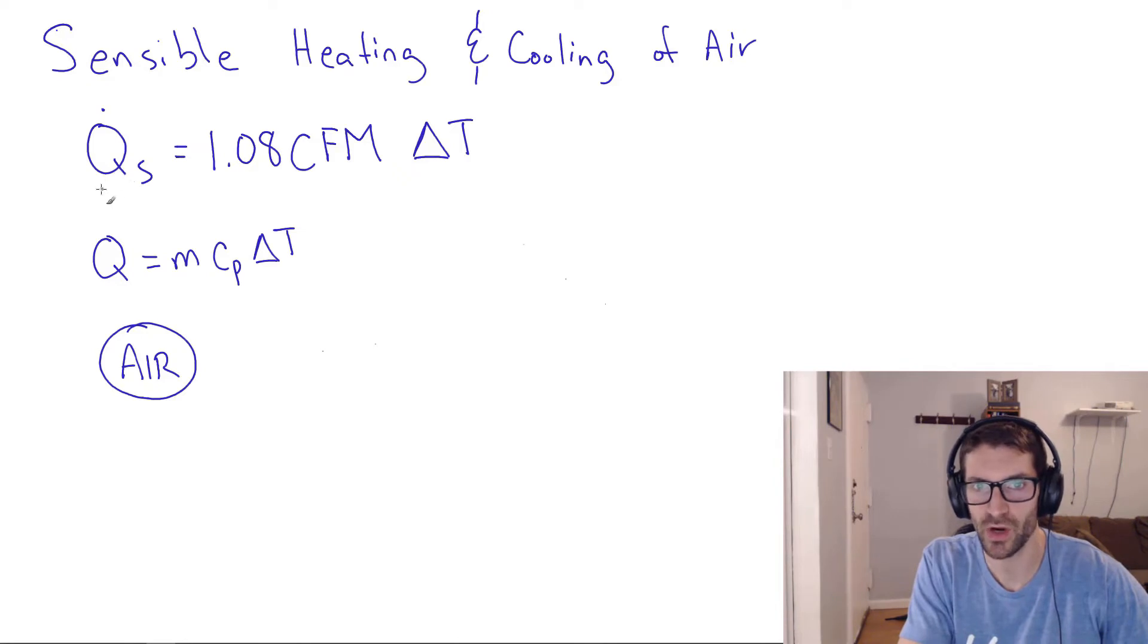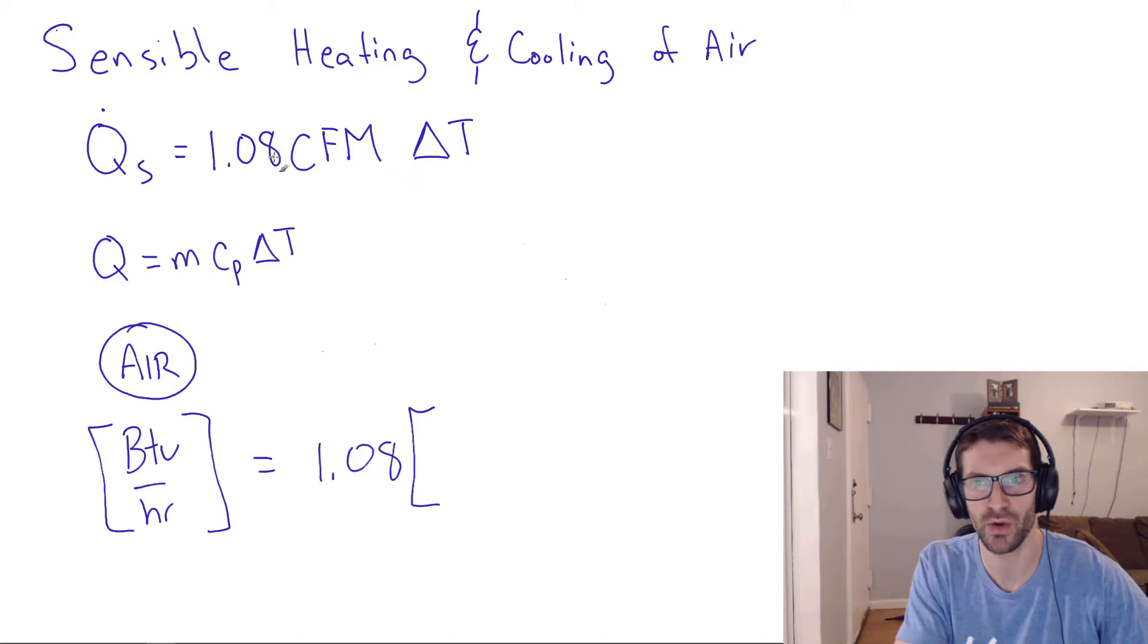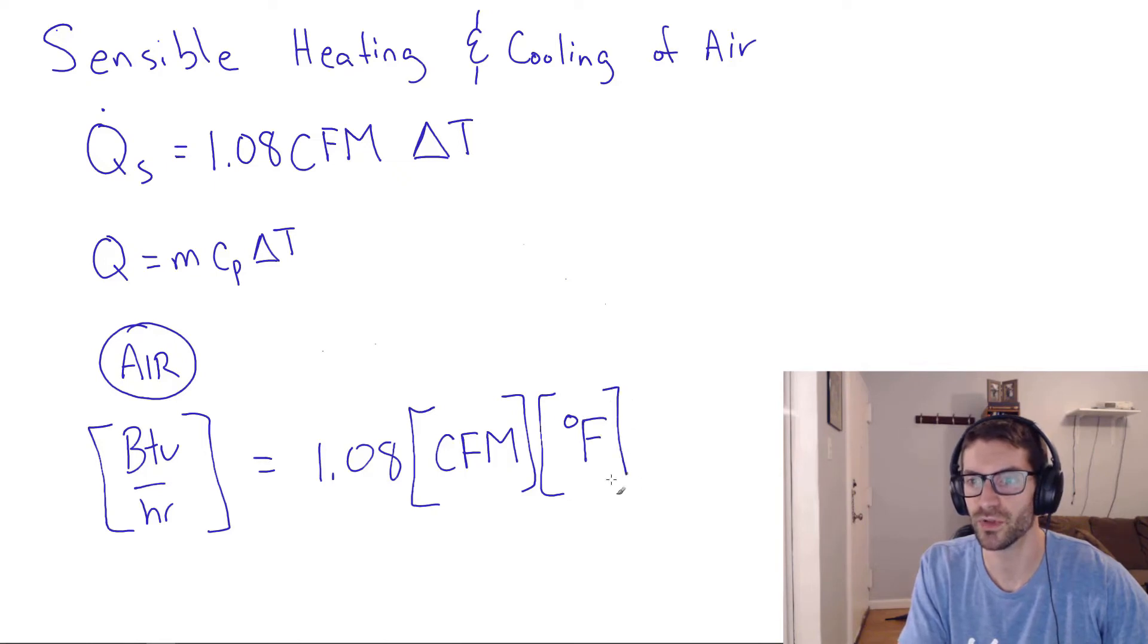And the units for heat transfer rate coming out will always be in BTU per hour. And for the right side, it's the constant 1.08. And the volume flow rate of air has to always be given in CFM. So much so that we don't even say 1.08 volume flow rate delta T. We actually say CFM so that it makes it really crystal clear that you have to put that volume flow rate in in CFM. And then the delta T has to go in in degrees Fahrenheit. Again, if you use Celsius, this is not the rule of thumb for you.